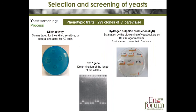Hydrogen sulfide production was monitored using Biggy Agar medium. The intensity of the brown colony color is directly proportional to the amount of hydrogen sulfide produced by the yeast. We also evaluated the IRC7 gene of the different yeasts to assess their capacity to release varietal thiols.